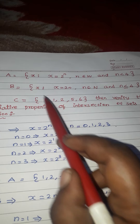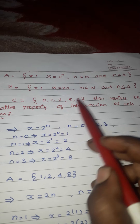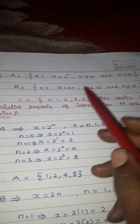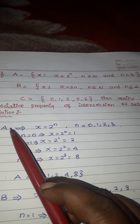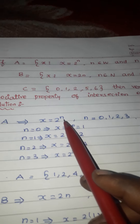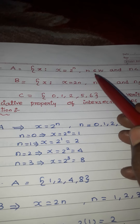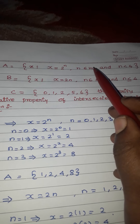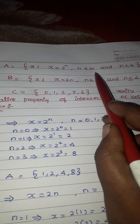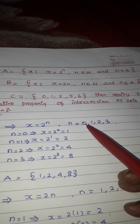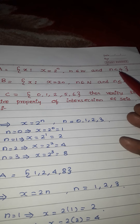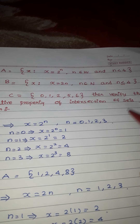So here we have roster form and set builder form. First we have to change the sets A and B to roster forms. Here the main rule for set A is x equals 2 power n. Then n belongs to W — W means whole numbers, which starts from 0. So n goes 0, 1, 2, 3. We have to write up to 3.